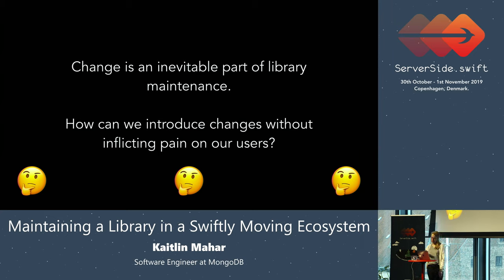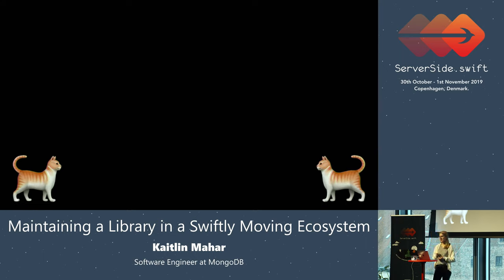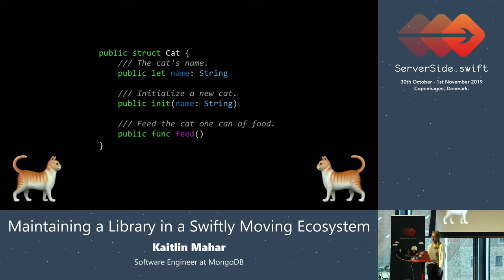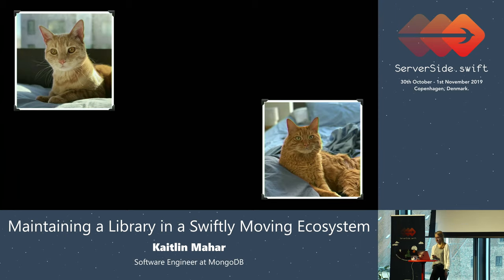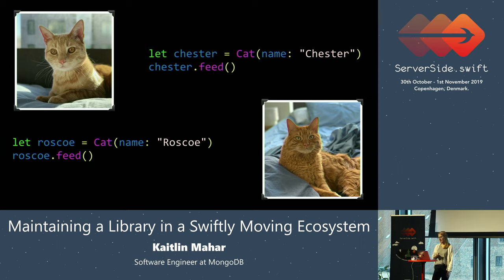The most important thing I want to start off with is: change your API gradually. For a little example, if you follow me on Twitter or anything, you know that I love cats — conference talks are just kind of an excuse to show people pictures of my cats. Say you maintain some library that has a public type, Cat. When you initialize this cat, you provide a cat name as a string, and this cat has a method that allows you to feed it one can of food.